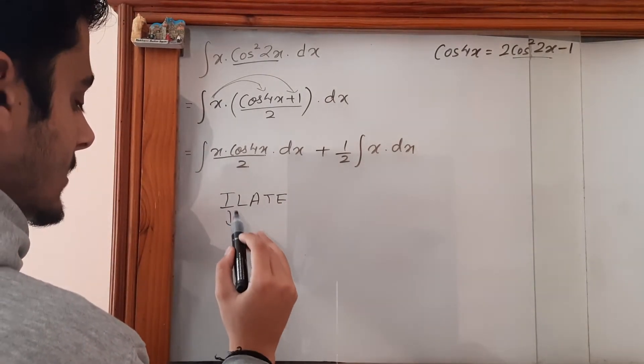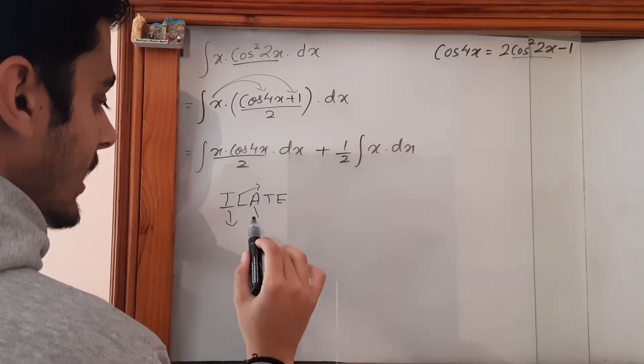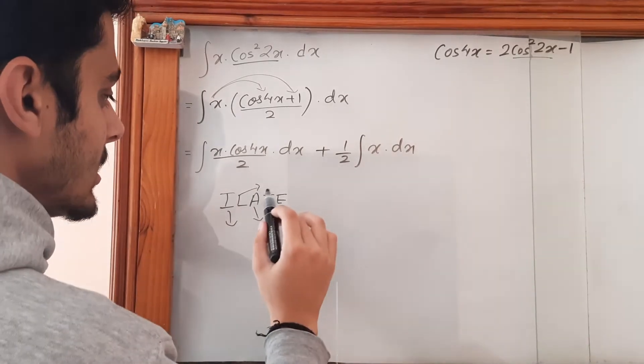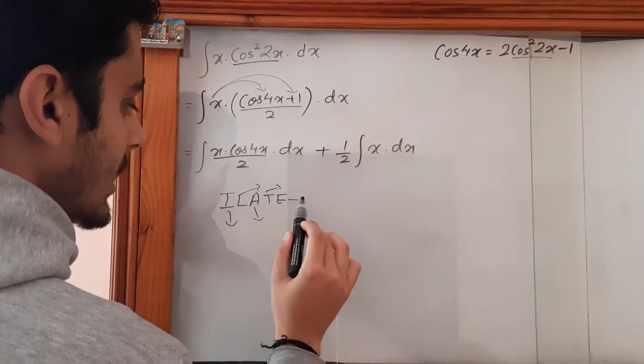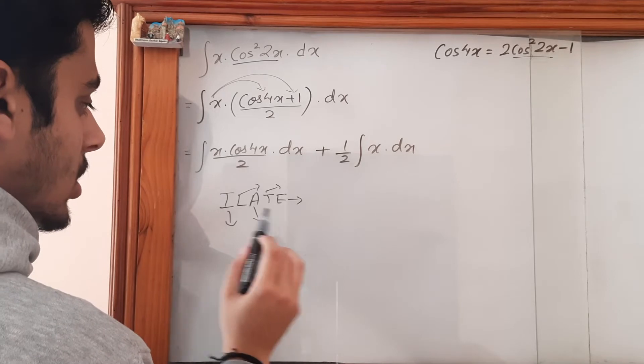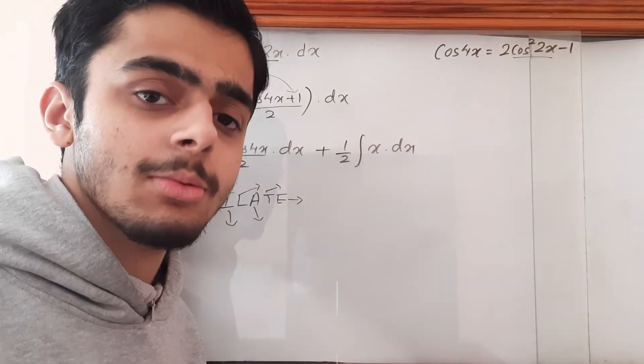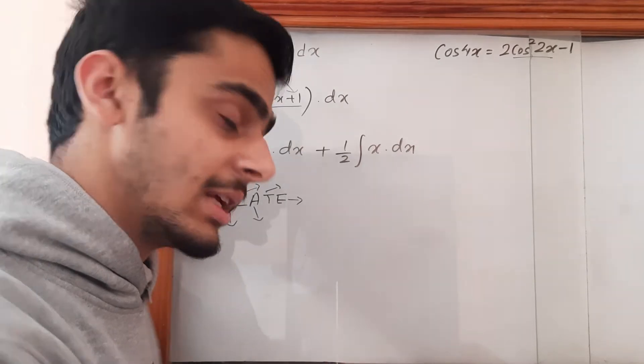I represents inverse, L represents logarithm, A represents algebraic, T represents trigonometric, and E represents exponential. Whichever comes earlier is given the priority and is differentiated, whereas the other one is integrated.